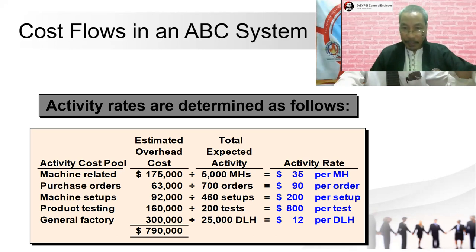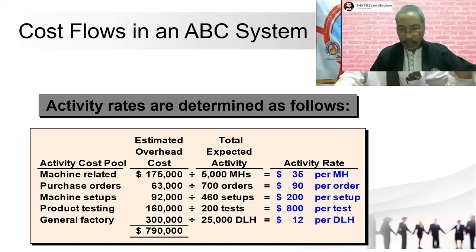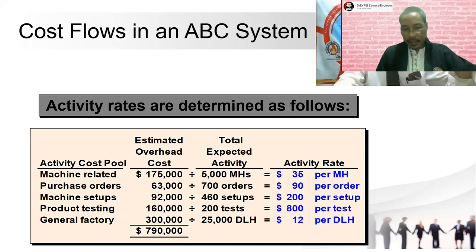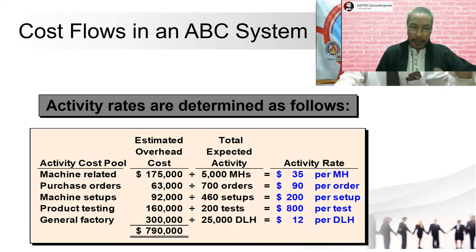So $175,000 divided by 5,000 gives an activity rate of $35 per machine hour. For the second line, $63,000 divided by 700 equals $90 per order. Machine setup: $92,000 divided by 460 equals $200 per setup. Product testing: $160,000 divided by 200 tests equals $800 per test. General factory: $300,000 divided by 25,000 direct labor hours equals $12 per direct labor hour.